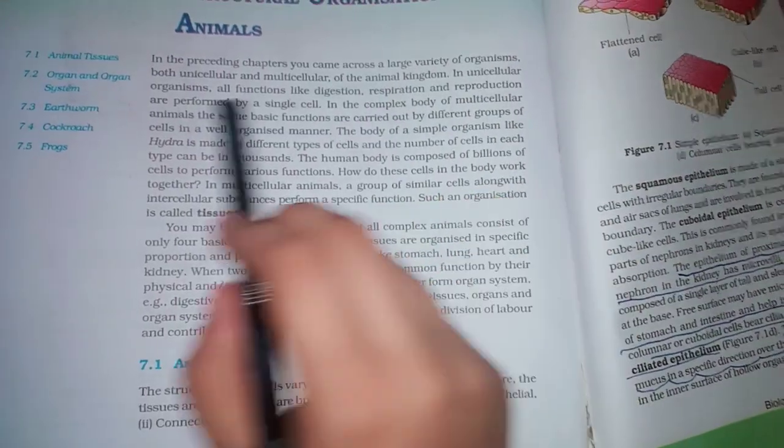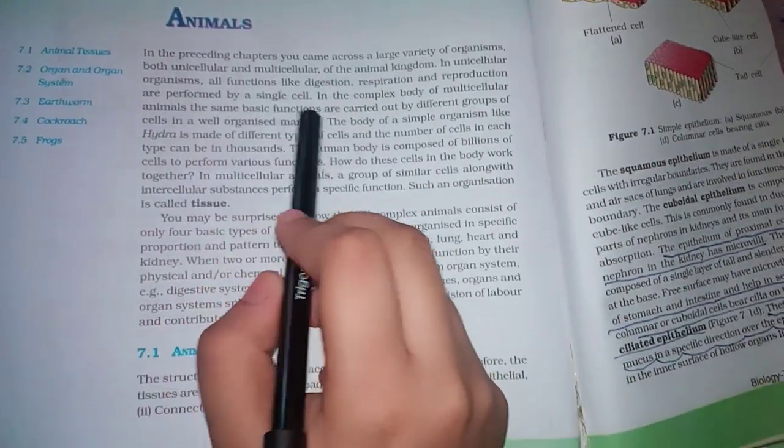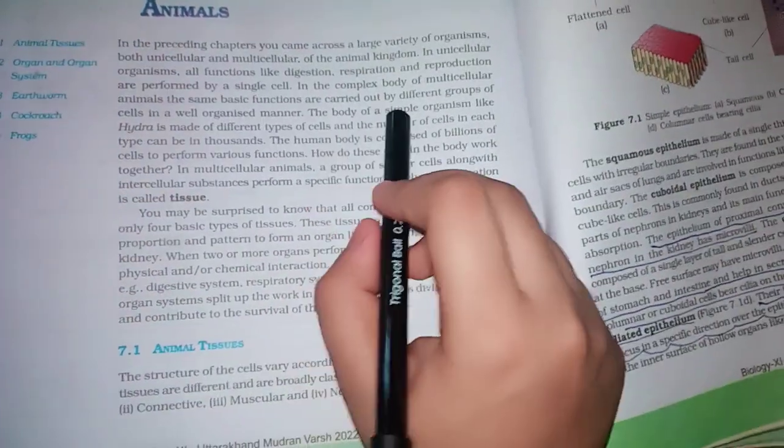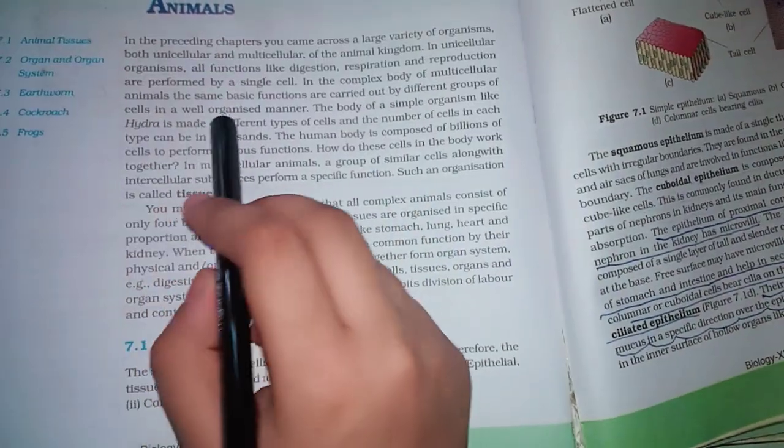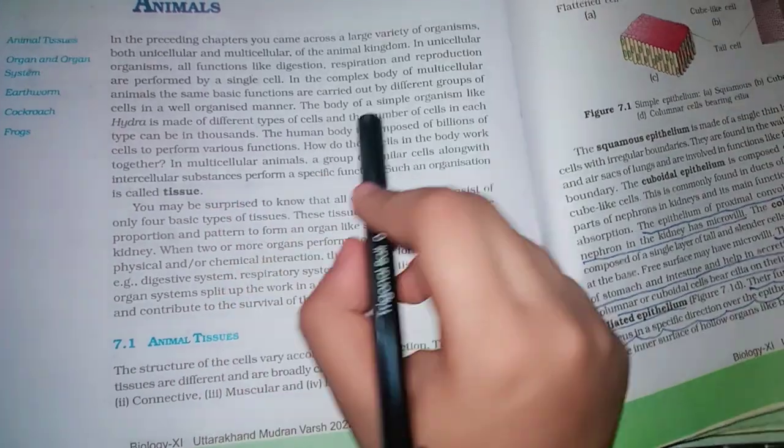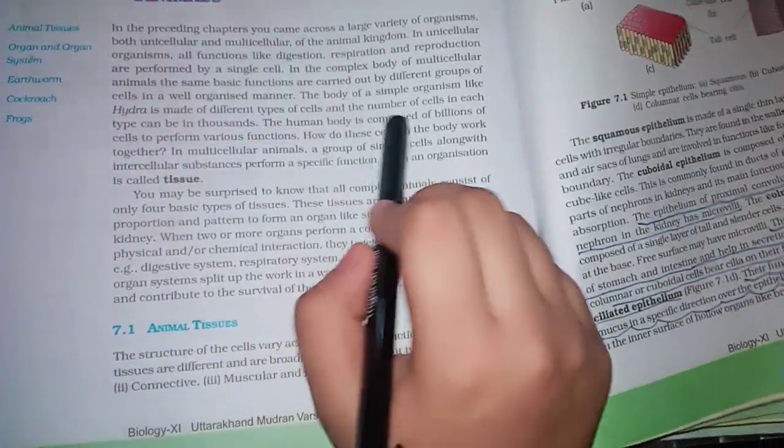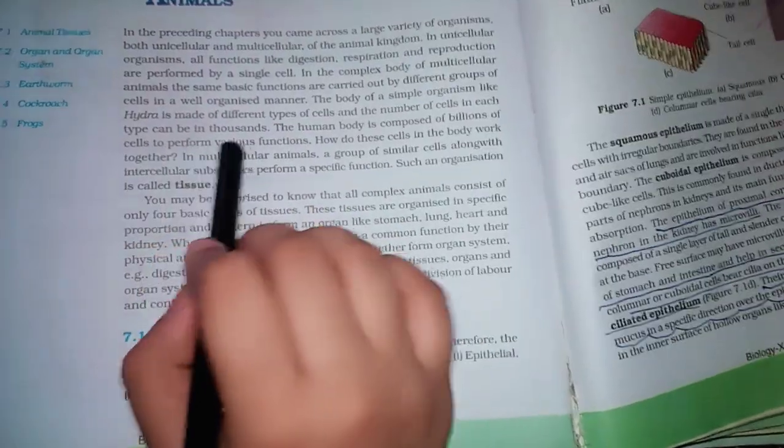In the complex body of a multicellular animal, the same basic functions are carried out by different groups of cells in a well-organized manner. The body of a simple organism like Hydra is made of different types of cells and the number of cells in each type can be in thousands. The human body is composed of billions of cells to perform various functions.